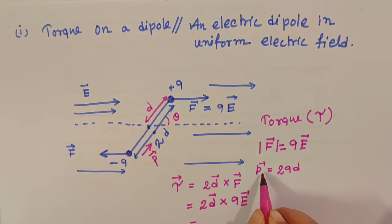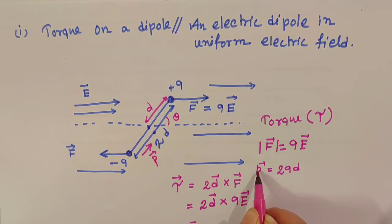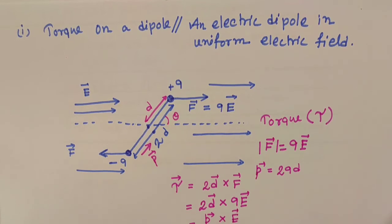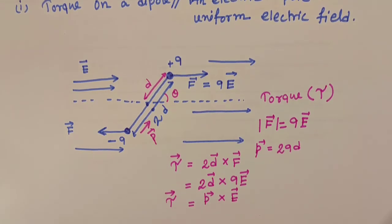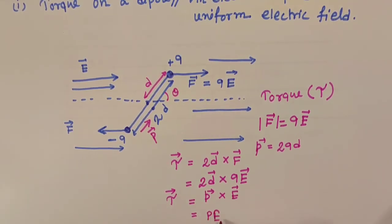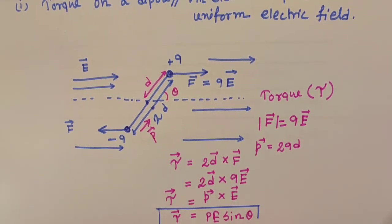What is the value of P? P is equals to 2QD, so in place of 2QD we can easily write P. So we get P cross E. Finally, we get tau is equals to P cross E. Now we know that cross product gives P E sine theta. So torque tau is equals to P E sine theta. This is the expression for tau.